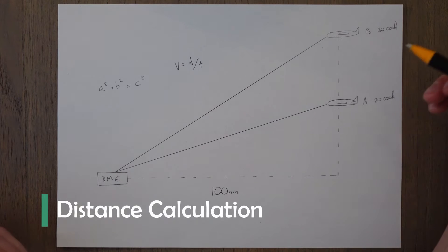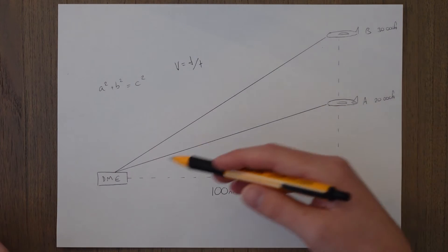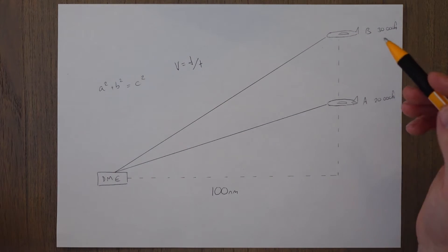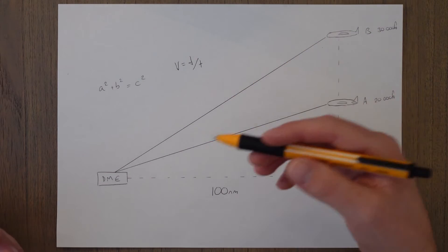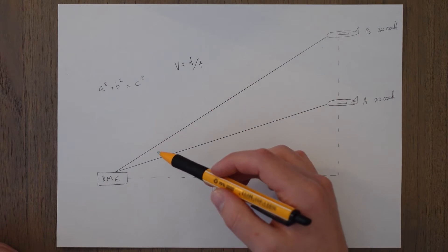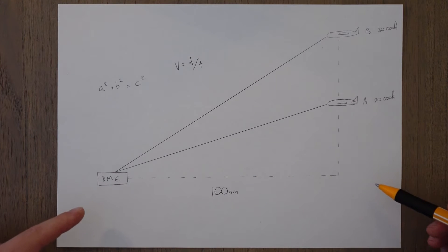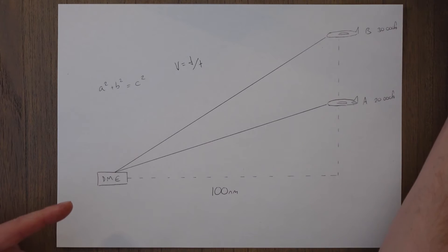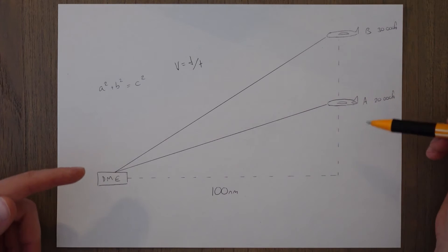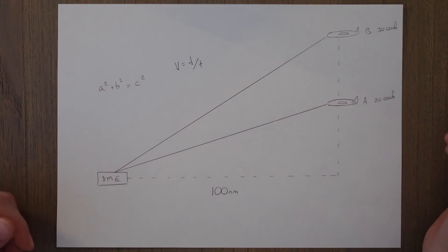The DME interrogator in the aircraft measures the time it takes for the signal to go back and forth, and using this time delay between sending out and receiving a signal it calculates the slant range based on speed equals distance over time, dividing the distance in half. The distance measured is slant range, not the horizontal distance over the ground. This seems like it could be an issue because planes can fly from the ground up to 30,000 feet and more, so this change in height will affect the slant range depending on your altitude.